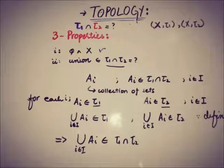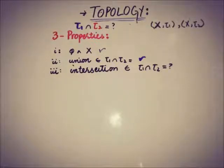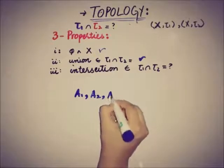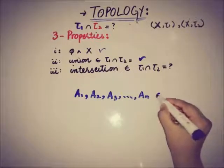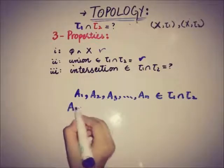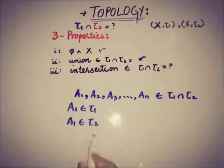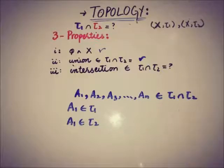Now moving toward the third property, which is about taking finite members from τ1 ∩ τ2. Their intersection should also be a member of τ1 ∩ τ2. So if we take finite members A1, A2, A3, up to AN, and these members belong to τ1 ∩ τ2, then by this we can say that A1 is a member of τ1 and also a member of τ2, and we can say this for all finite members of τ1 ∩ τ2.